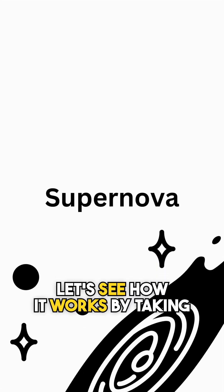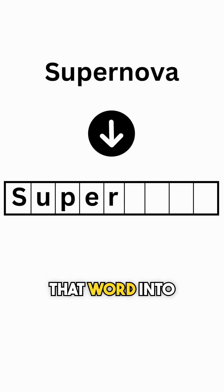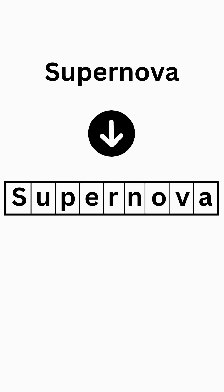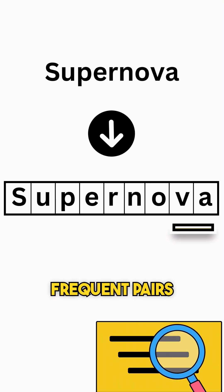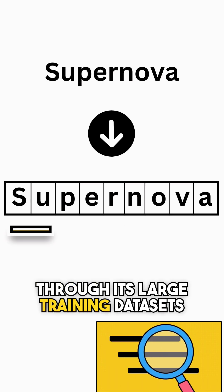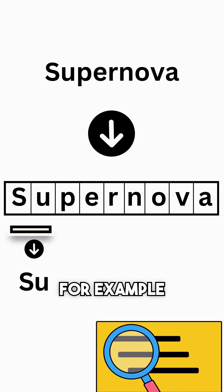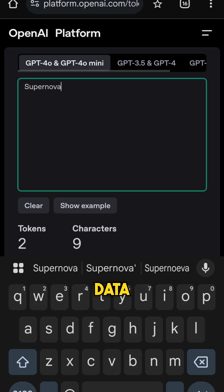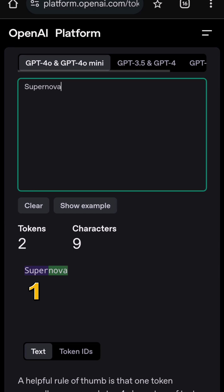Let's see how it works by taking the example word SOPANOVA. The BPE algorithm first splits that word into individual characters. After that, it looks at the most frequent pairs by matching them through its large training datasets. For example, if SOPR appears frequently in the training data, the algorithm might merge those letters into a single token.